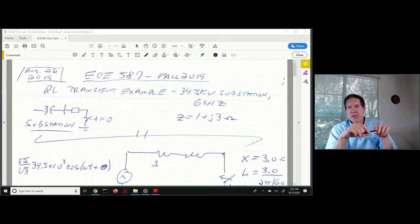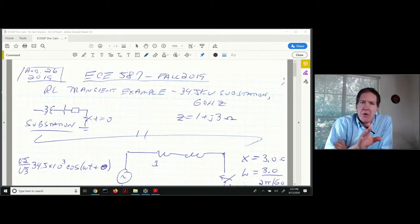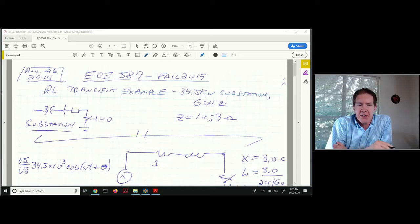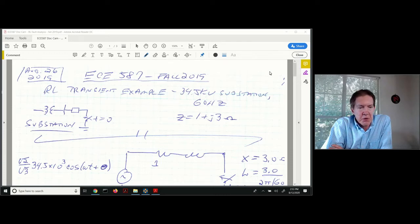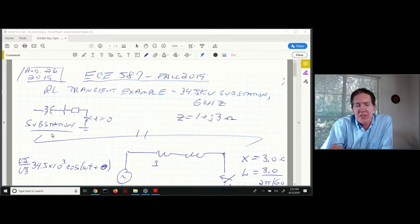Now I want to go through a quick example of how we would do the RL transient analysis by hand. In this particular scenario, we're looking at a situation where I would have a substation.